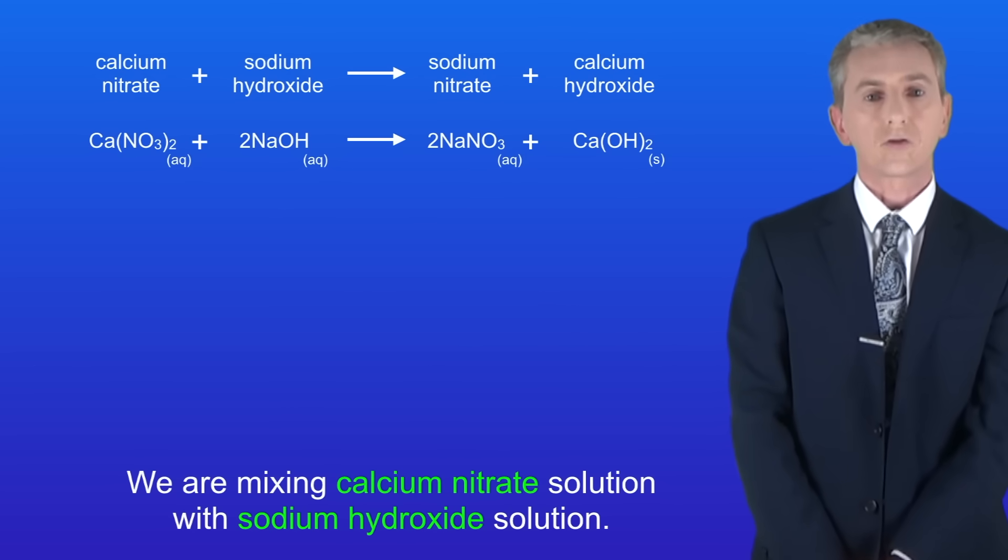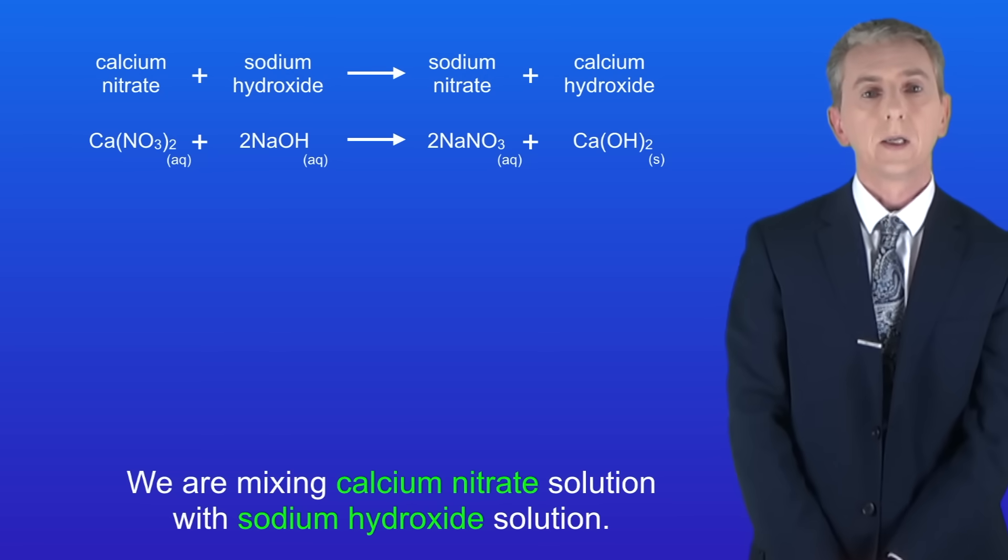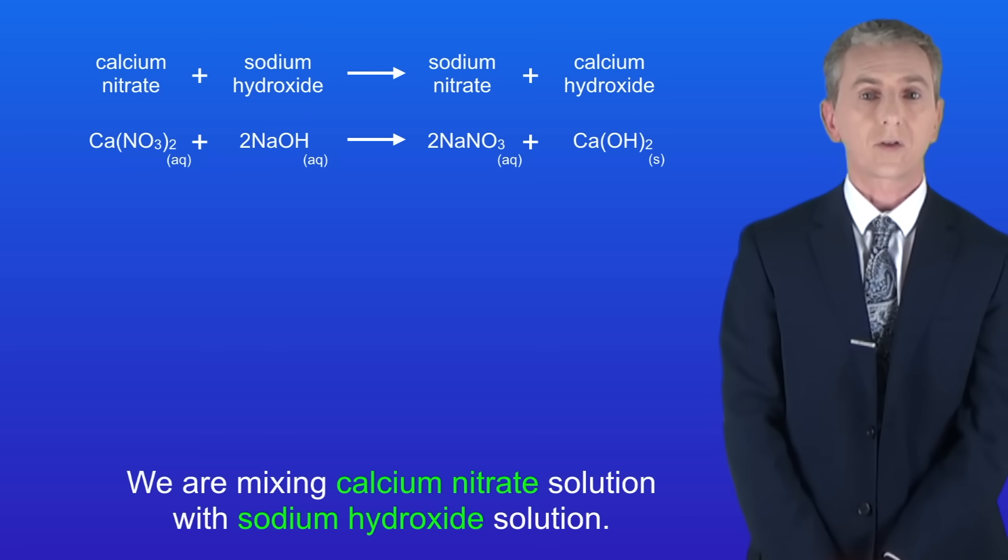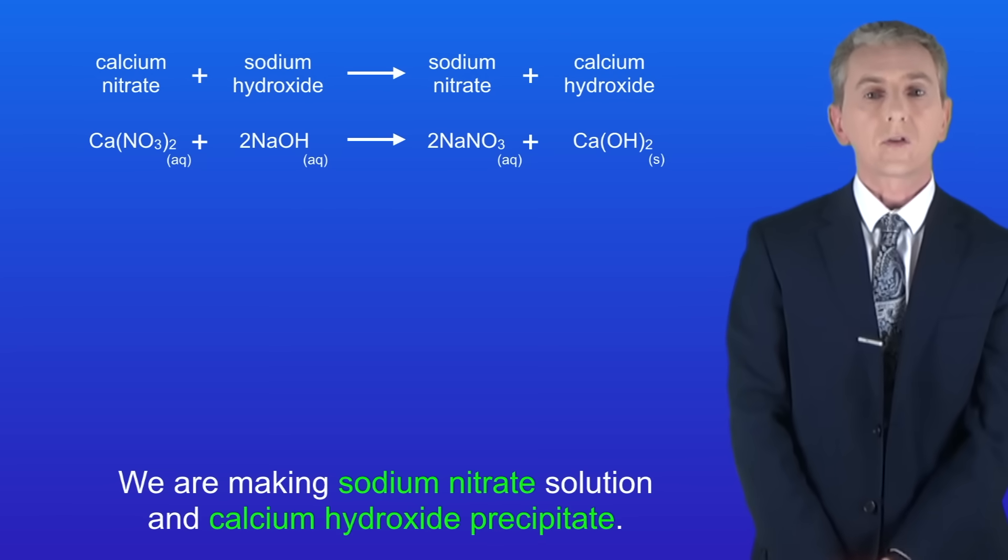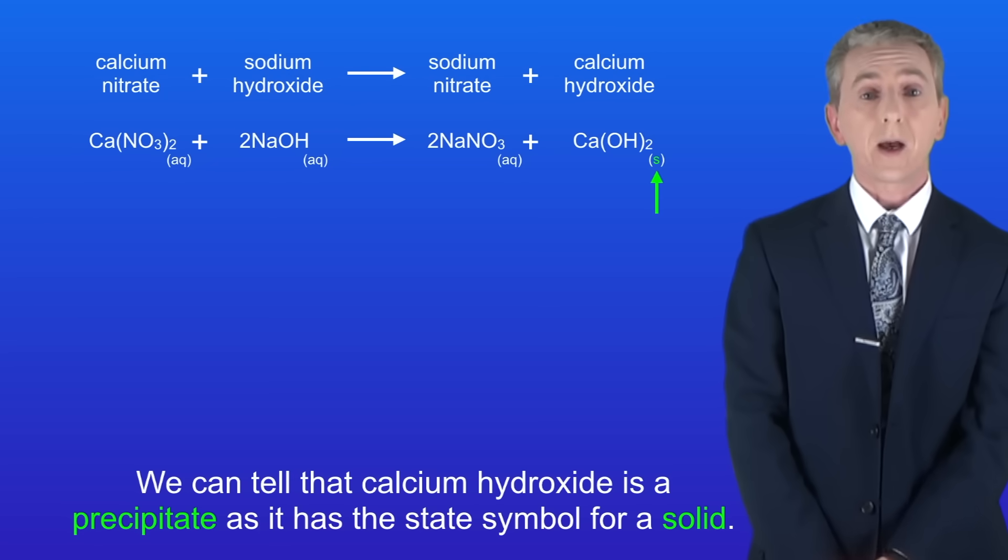In this case I'm using calcium nitrate, but it would also work for other soluble calcium compounds. As you can see we're mixing calcium nitrate solution with sodium hydroxide solution. We're making sodium nitrate solution and calcium hydroxide precipitate. And we can tell that calcium hydroxide is a precipitate as it's got the state symbol for a solid.